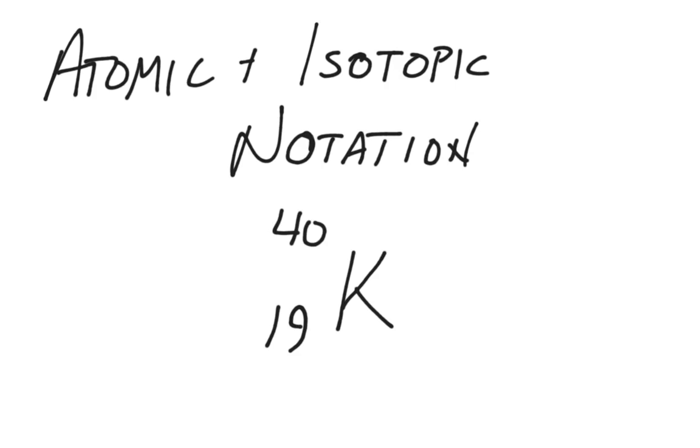Anytime we're given any atomic or isotopic notation, we can always determine three things: the number of protons, the number of neutrons, and the number of electrons.